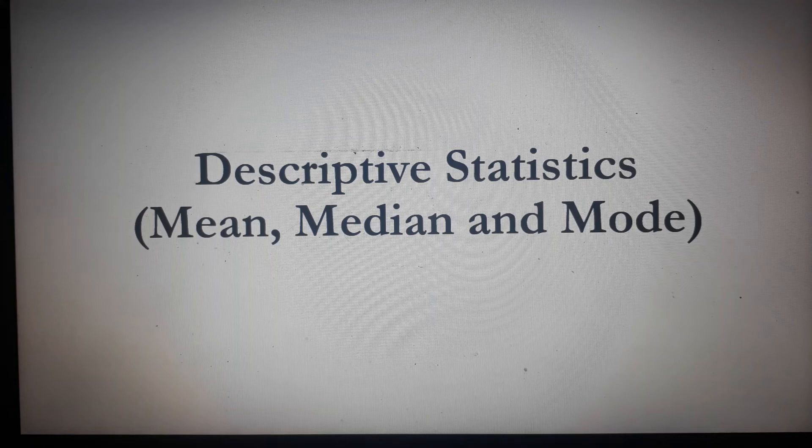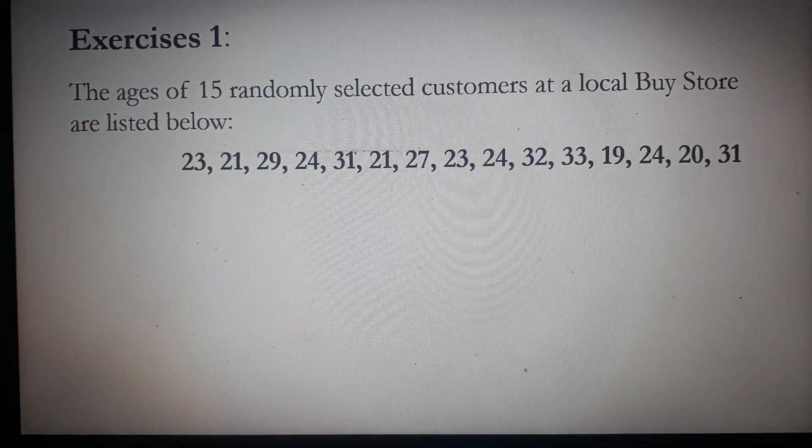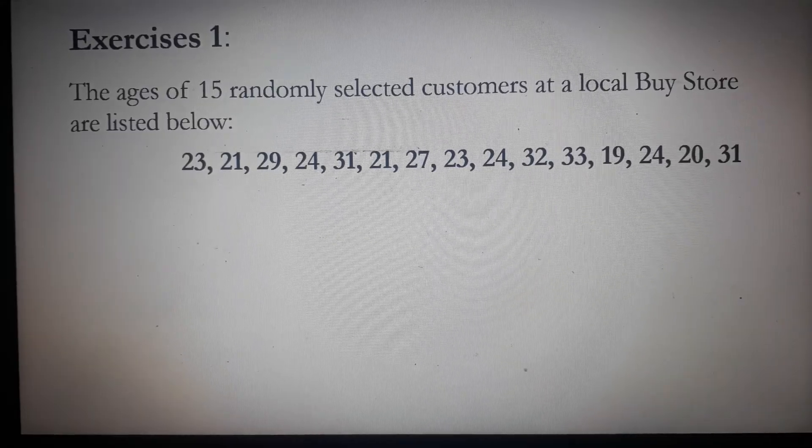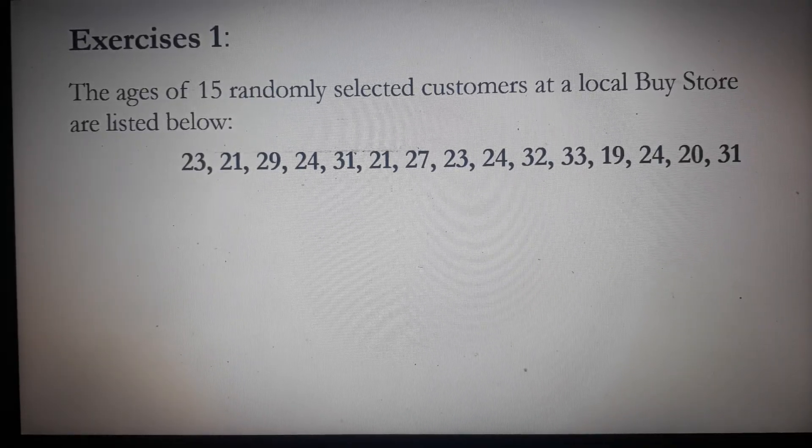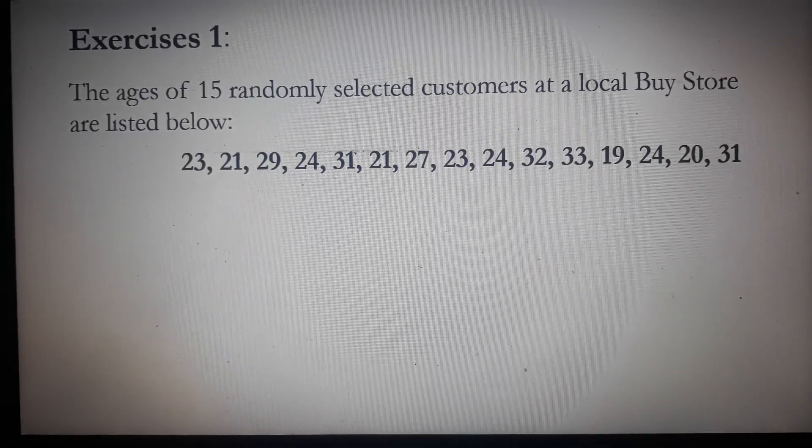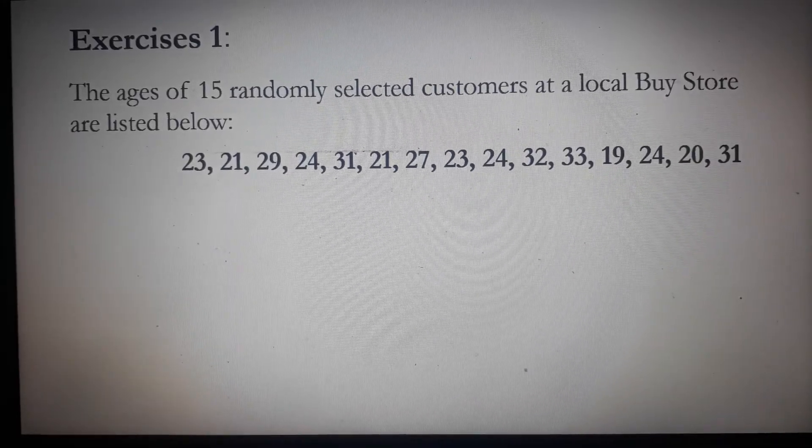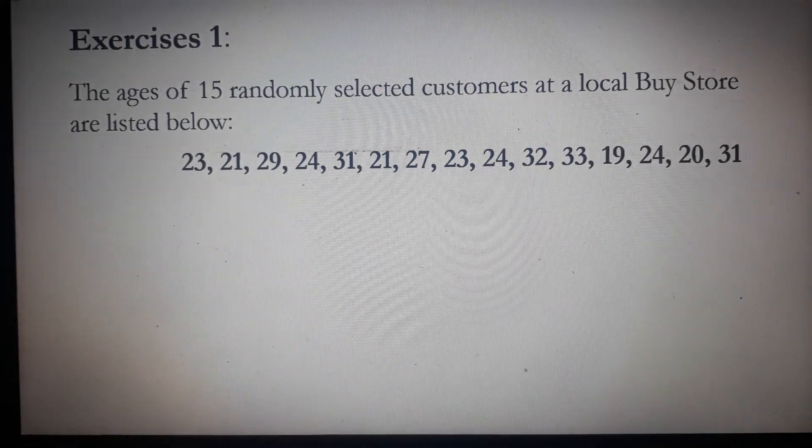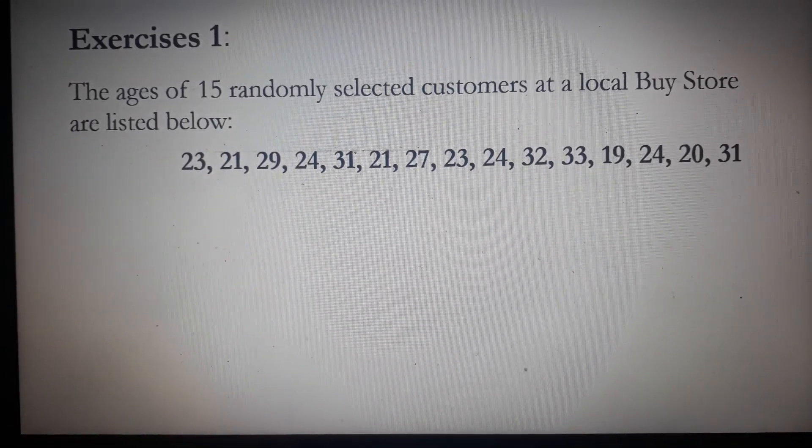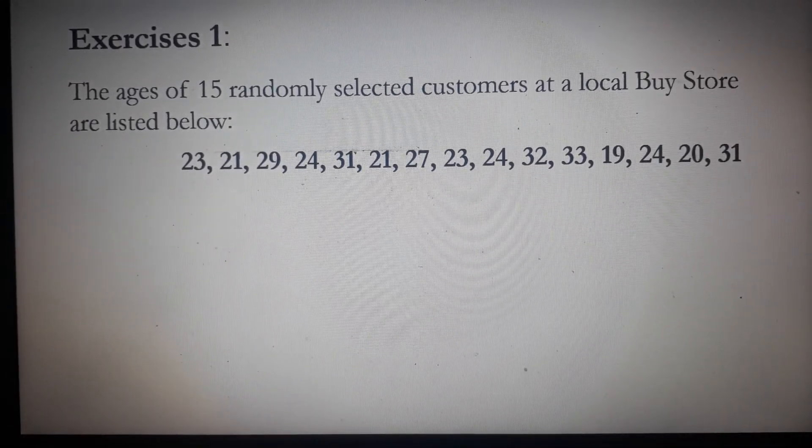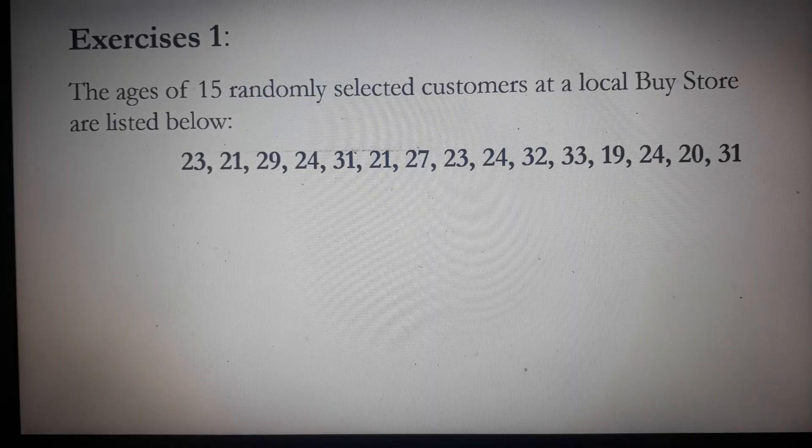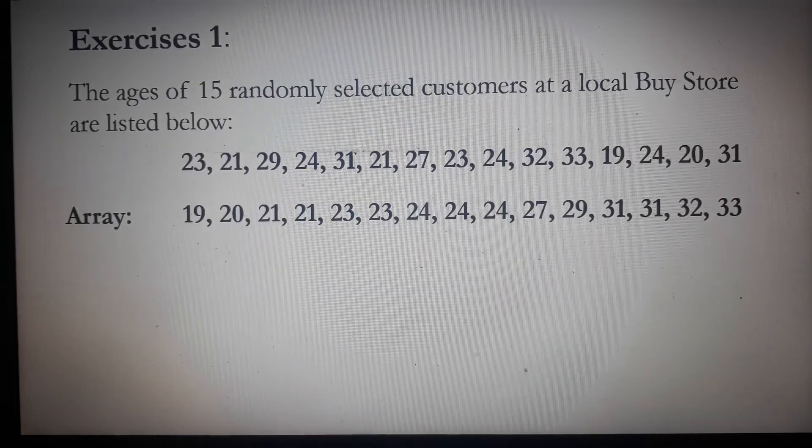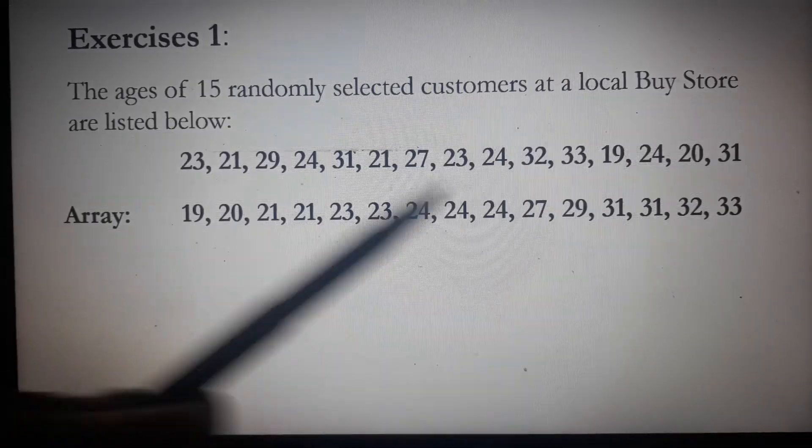Let's apply these concepts by answering our first exercise. The problem reads: the ages of 15 randomly selected customers at a local buy store are listed below—23, 21, 29, and so on. To handle the data easily, it's better to arrange them in an array from lowest to highest.